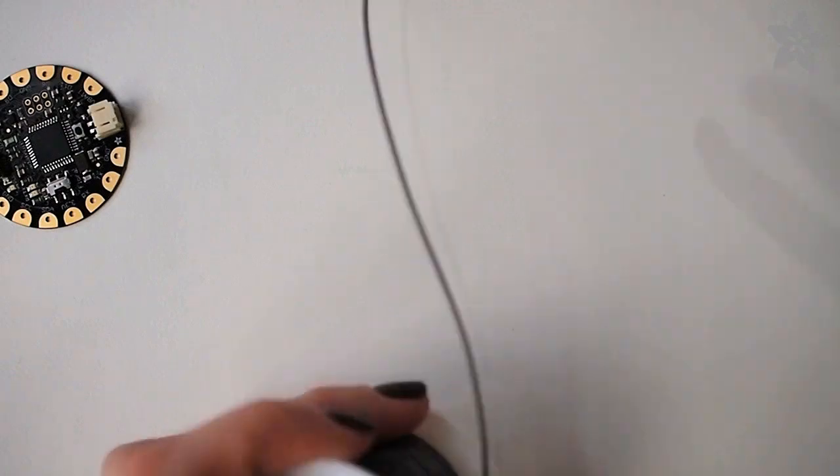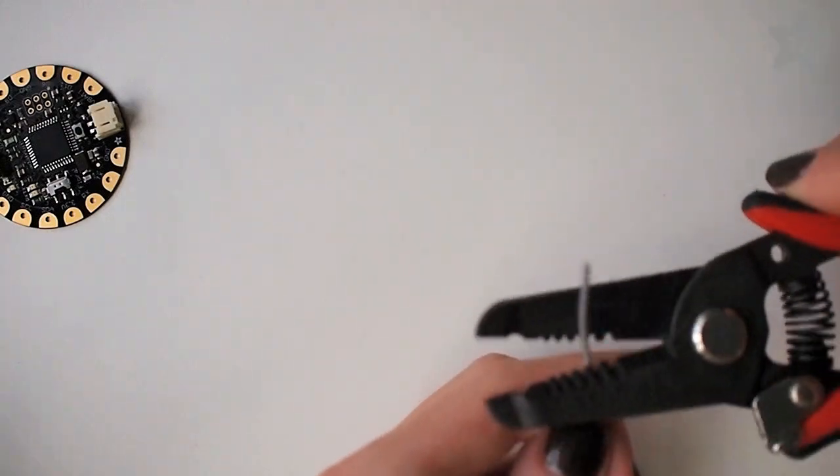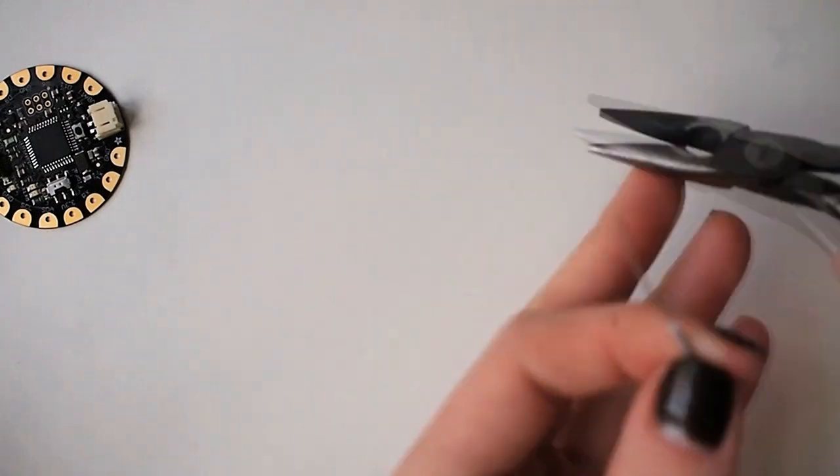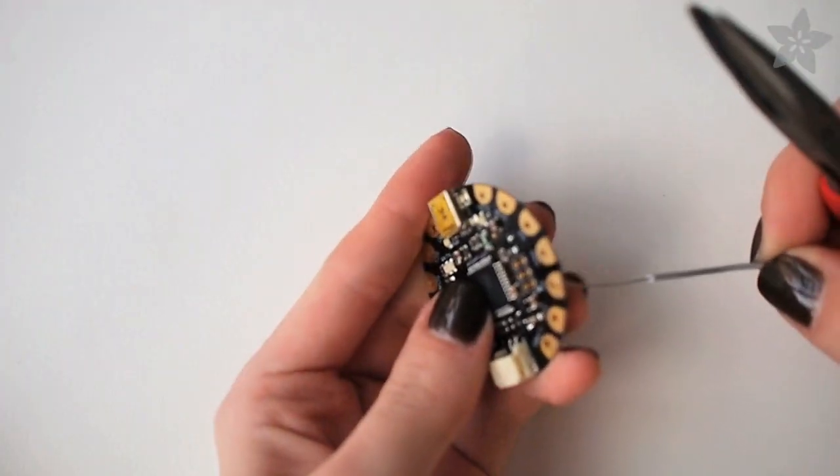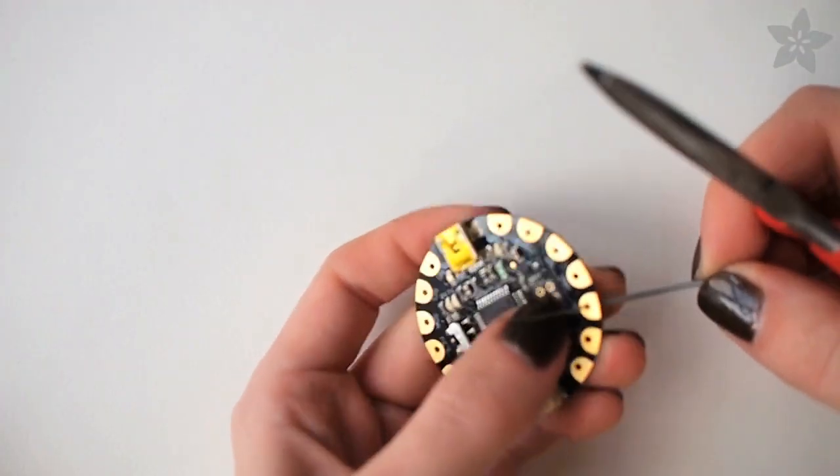You can use almost any kind of wire for this project. I'll be using this solid core hookup wire and I'll use wire strippers to remove the insulation at one end, although you can also use completely uninsulated wire for this project.